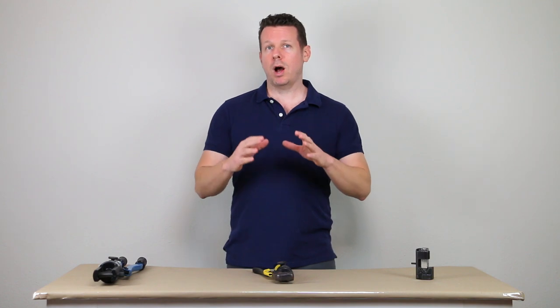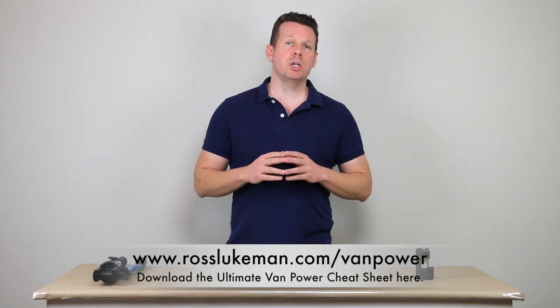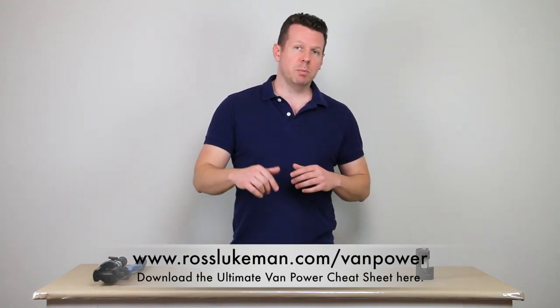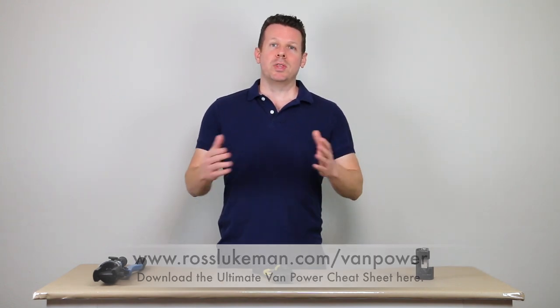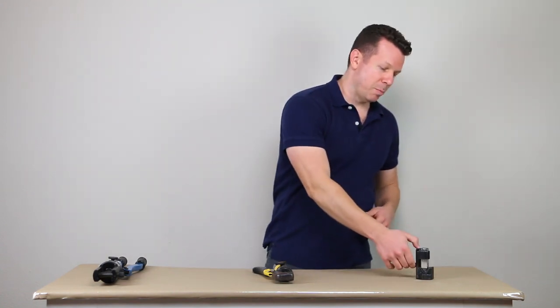If you want your own copy of the Ultimate Van Power Cheat Sheet, all you have to do is click the link below or go to rossluchman.com slash van power. So with that, let's take a look at the hammer crimper.